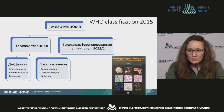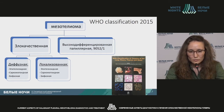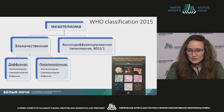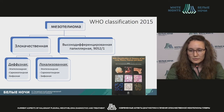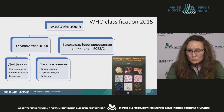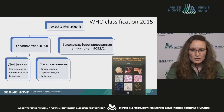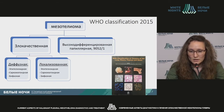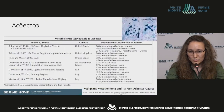Diffuse and localized mesotheliomas have different clinical presentations, different locations within the serous cavities, and different histology. Both types may be epithelioid, biphasic, or sarcomatoid. They cannot be told apart easily, so the pathologist on the basis of a biopsy without clinical data cannot tell which is which for sure.